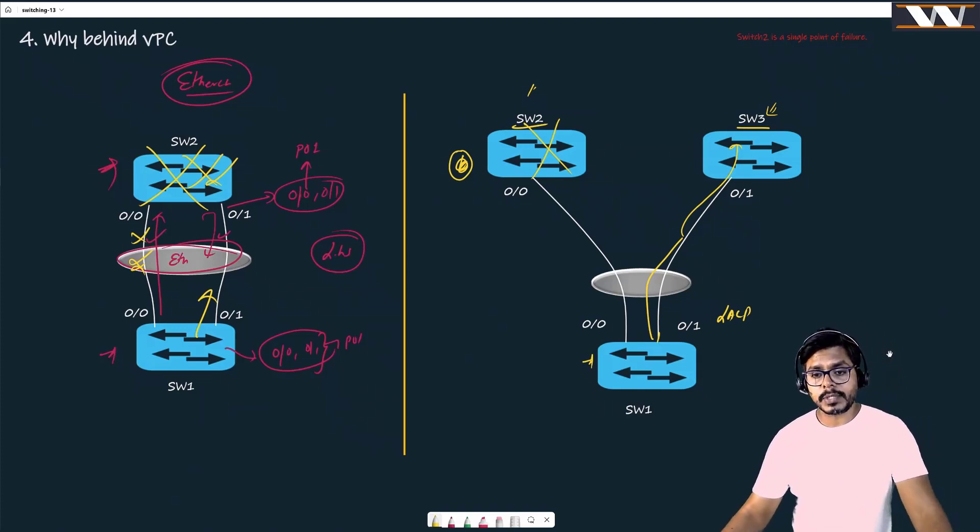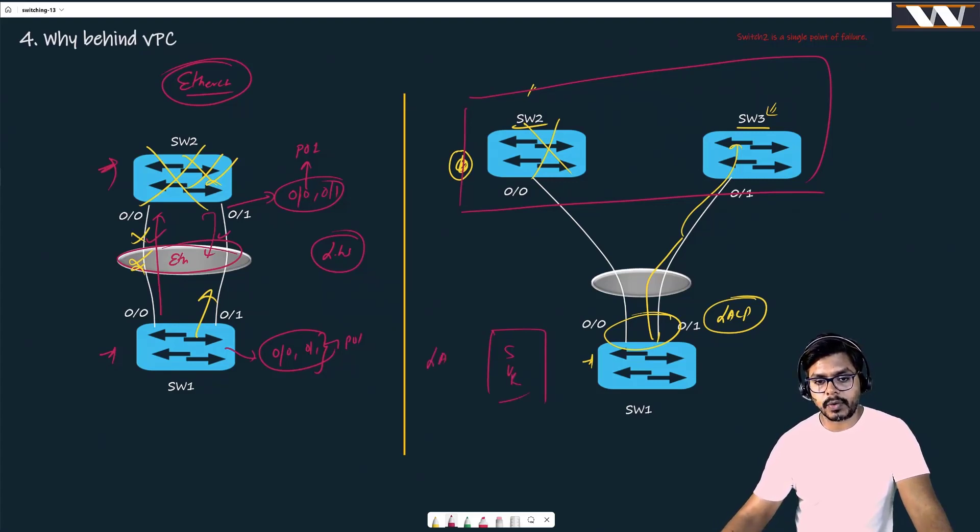Now suppose it doesn't matter because switch one understands only LACP, it is doing only LACP. The magic is happening on these two switches. Now if I connect this server also, suppose the server understands only LACP, it doesn't understand anything else, it can also connect like this. If that is the case, then I have solved the server problem too. If this link goes down, then basically my traffic can go out from here like this.